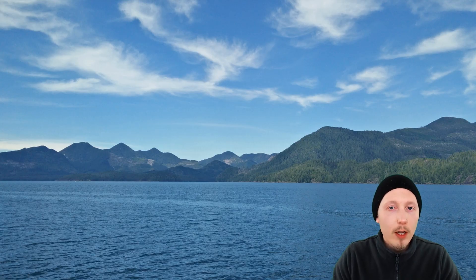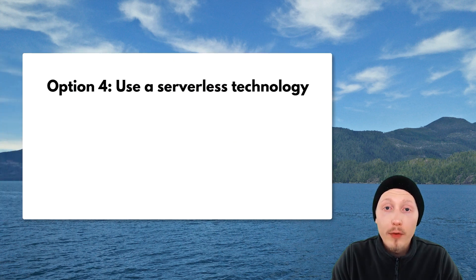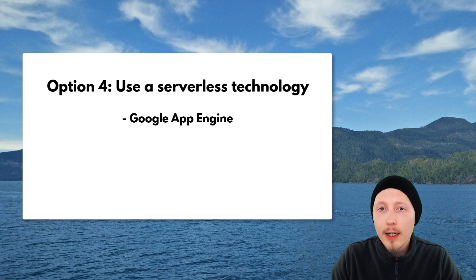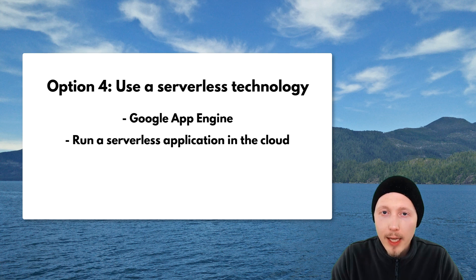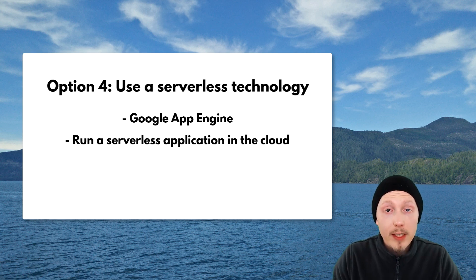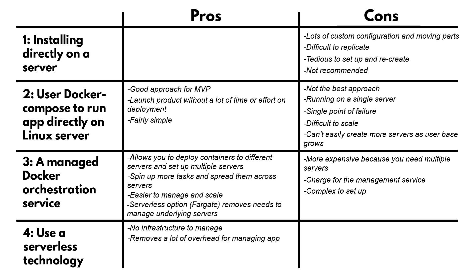Option four is to use a serverless technology. A good example would be Google App Engine, which allows you to run a totally serverless application in the cloud. The benefit is that you don't need to manage any infrastructure at all — as the name suggests, there are no servers for you to manage or maintain. This removes a lot of overhead, and if you're using something like Google Cloud, Google manages all of those servers for you, giving you a very scalable and secure architecture.